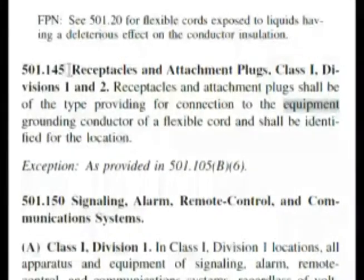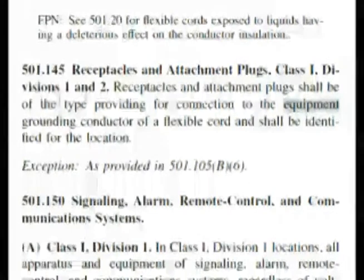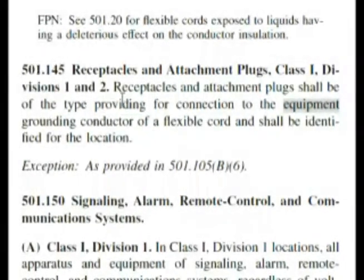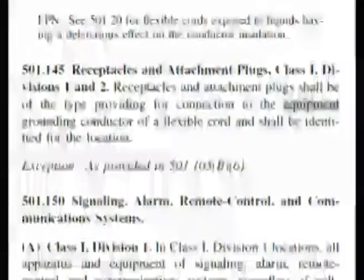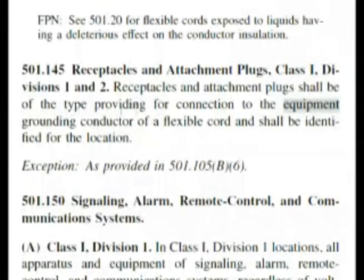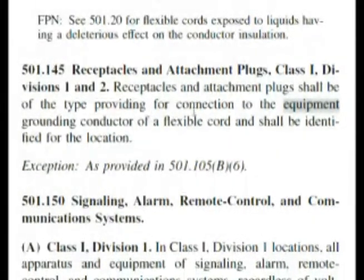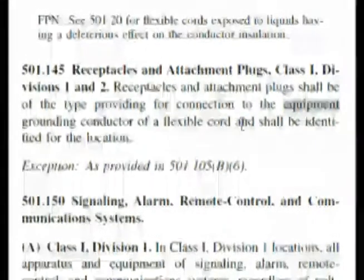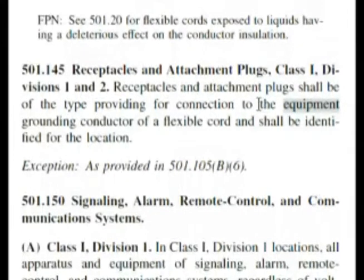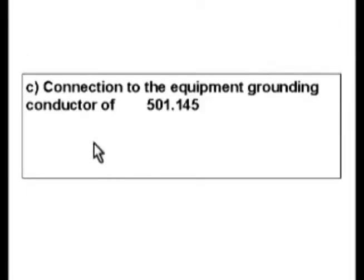Here we are in 501.145 — Receptacles and attachment plugs, Class 1, Divisions 1 and 2. This gets almost word for word in our question. Receptacles and attachment plugs shall be of the type providing for — and here's where our blank came in — connection to the equipment grounding conductor of a flexible cord. This is one of our answers, and that is choice C in our exam.